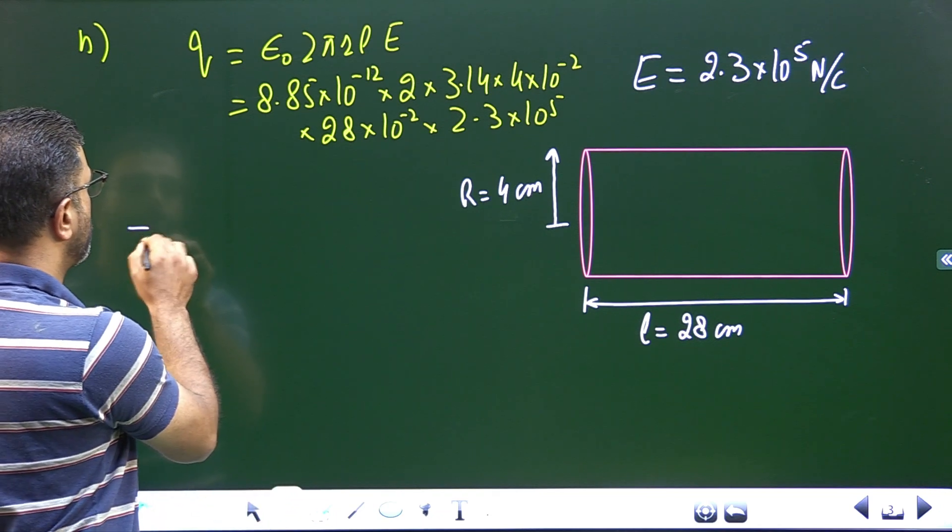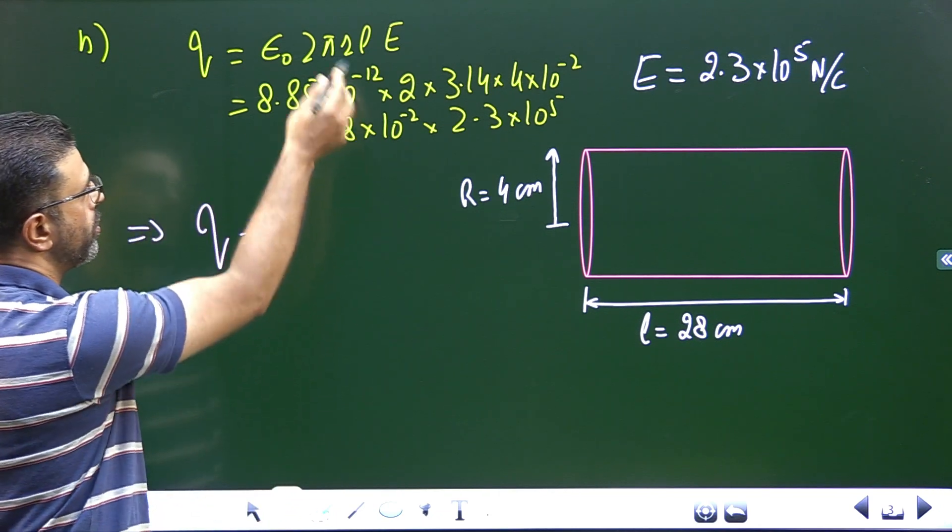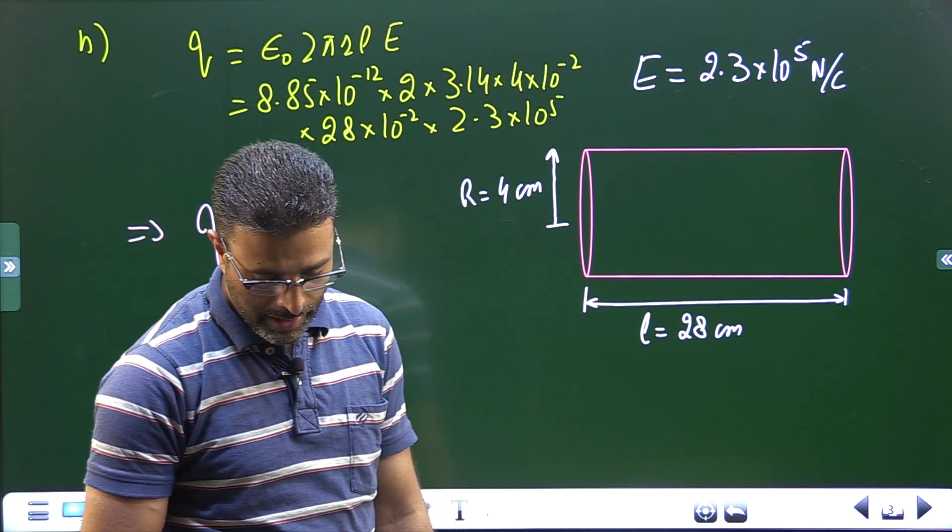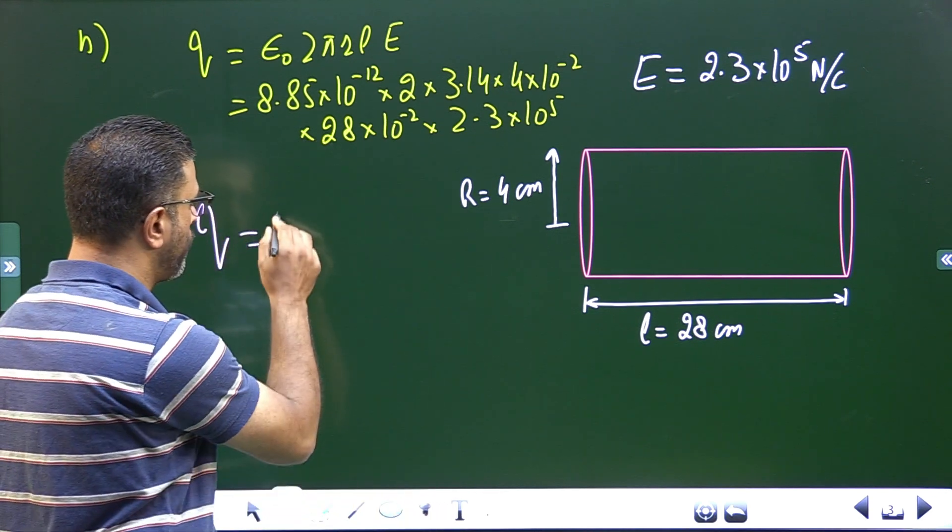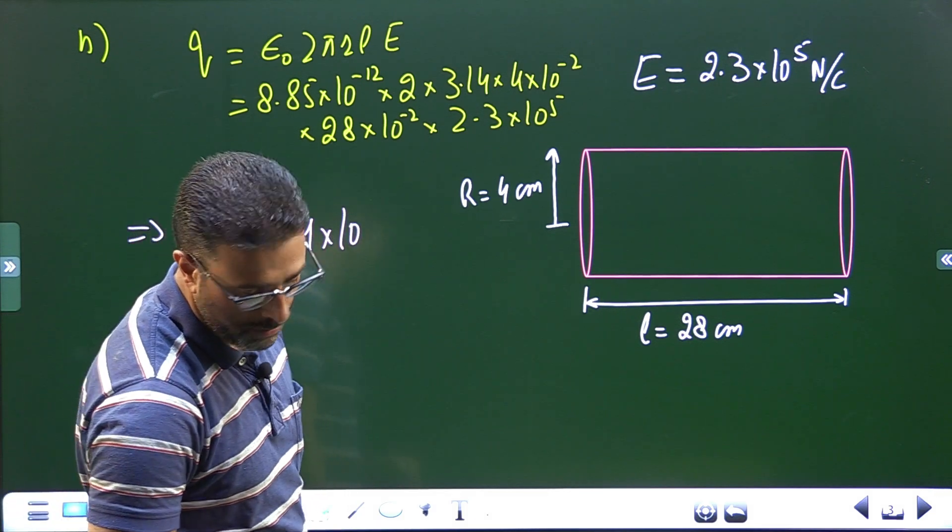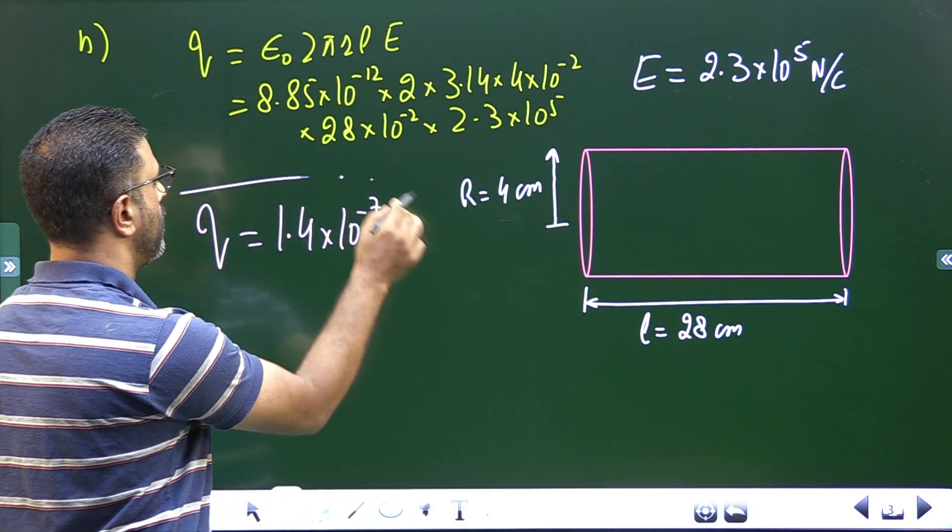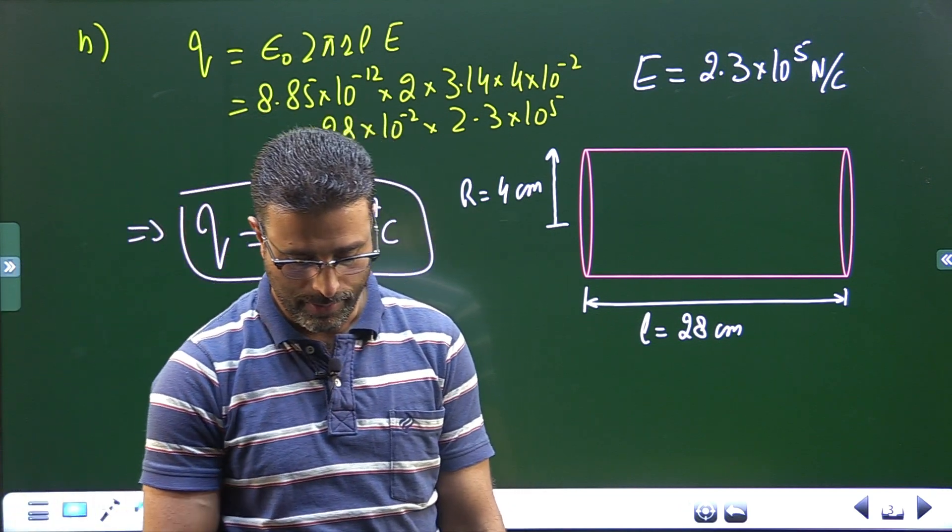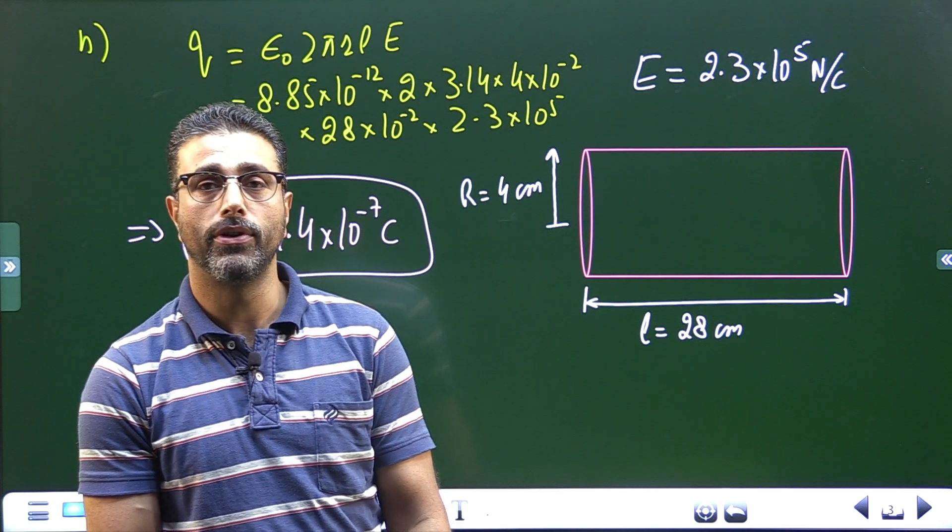So this implies Q is equal to, this is what you have to work out, I have already done that, it comes out to be 1.4 × 10^-7 Coulomb. So this is charge of the new drum. That's it, that will do for this session.